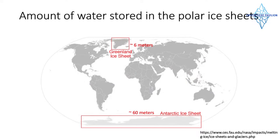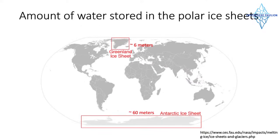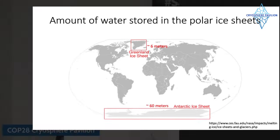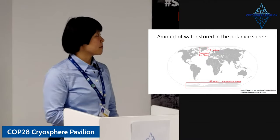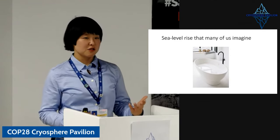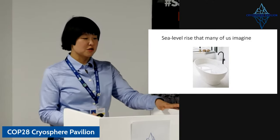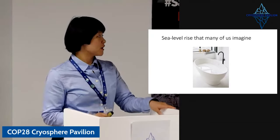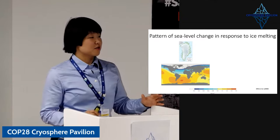The sources of this dramatic future sea level change are mostly the polar ice sheets in Greenland and Antarctica. In Greenland, there's about 6 meters of sea level equivalent ice volume locked up. In Antarctica, there's about 57 to 58 meters of sea level equivalent ice volume locked up. Our intuition might suggest that sea level will rise globally and uniformly when these ice sheets melt, but actually that's not true — sea level change patterns are quite complex.